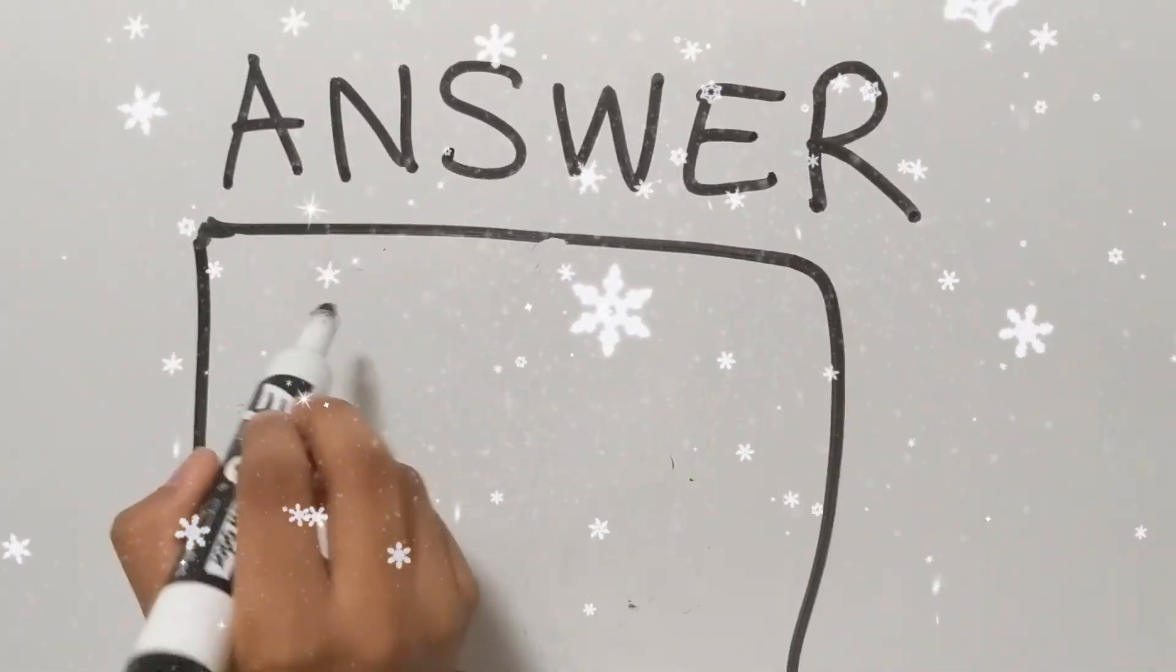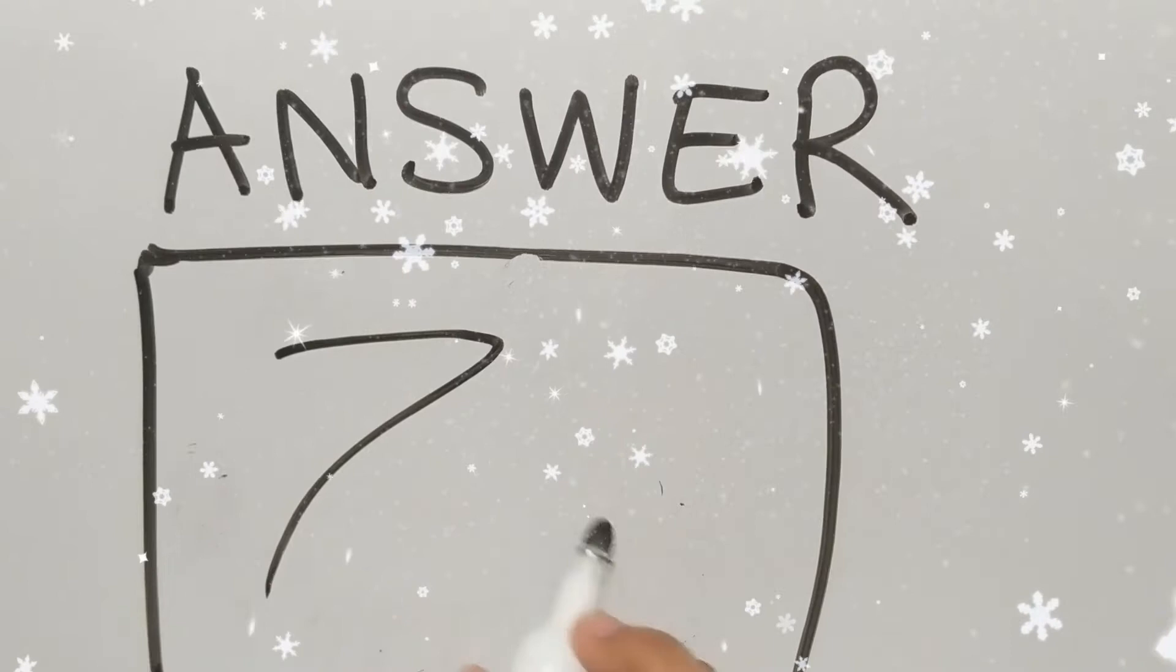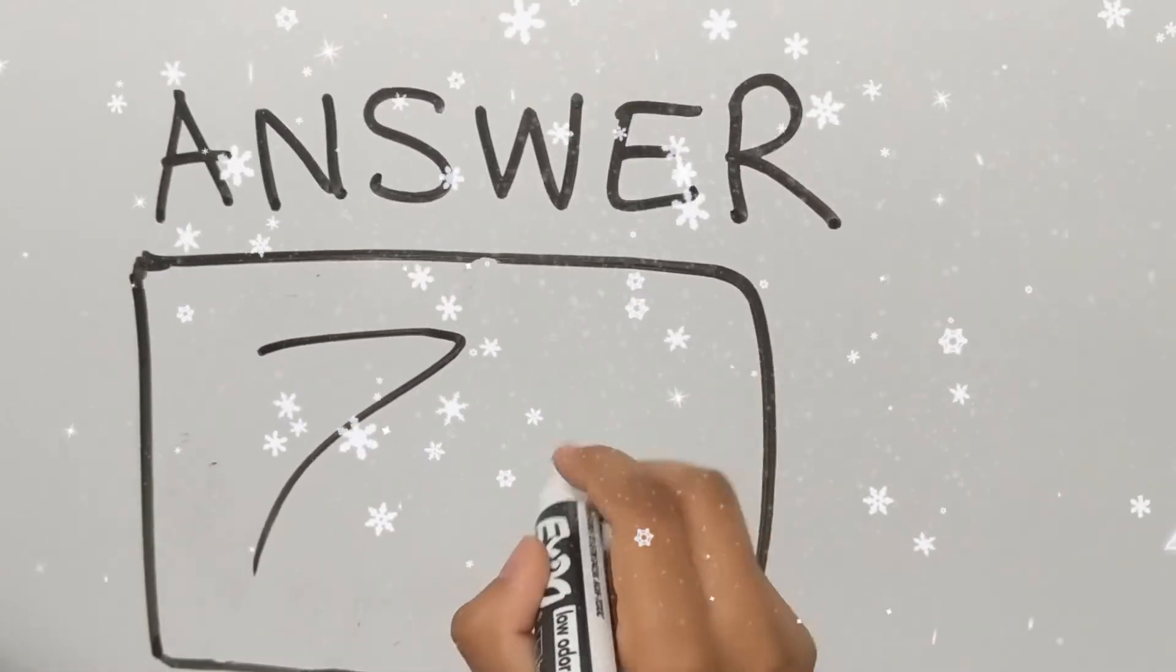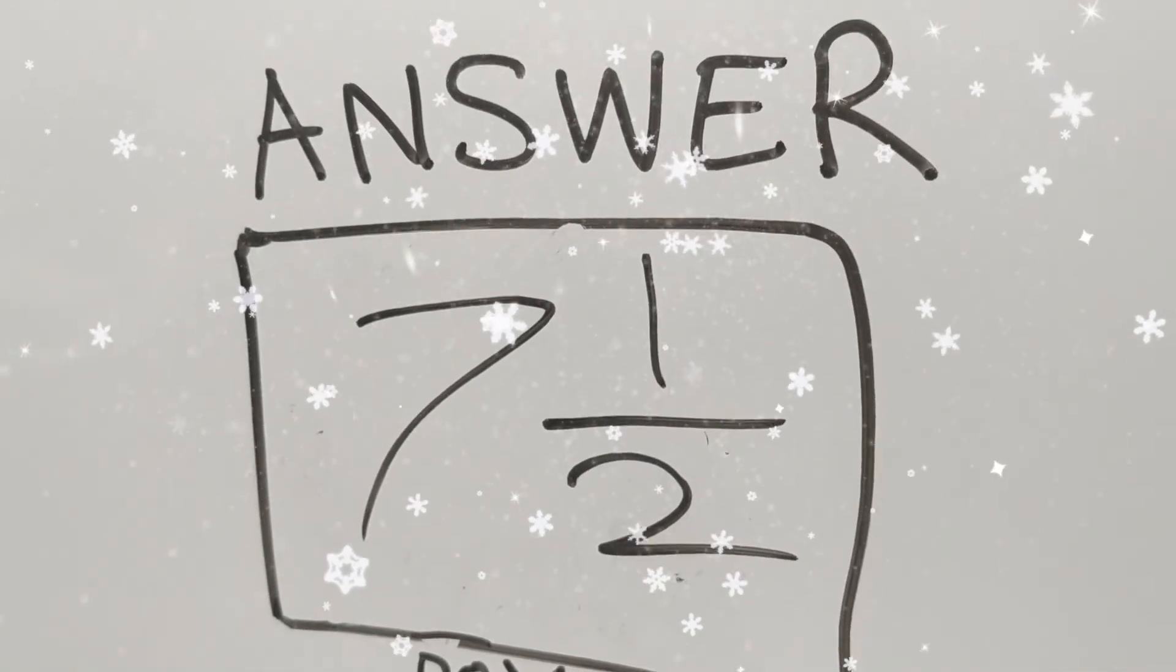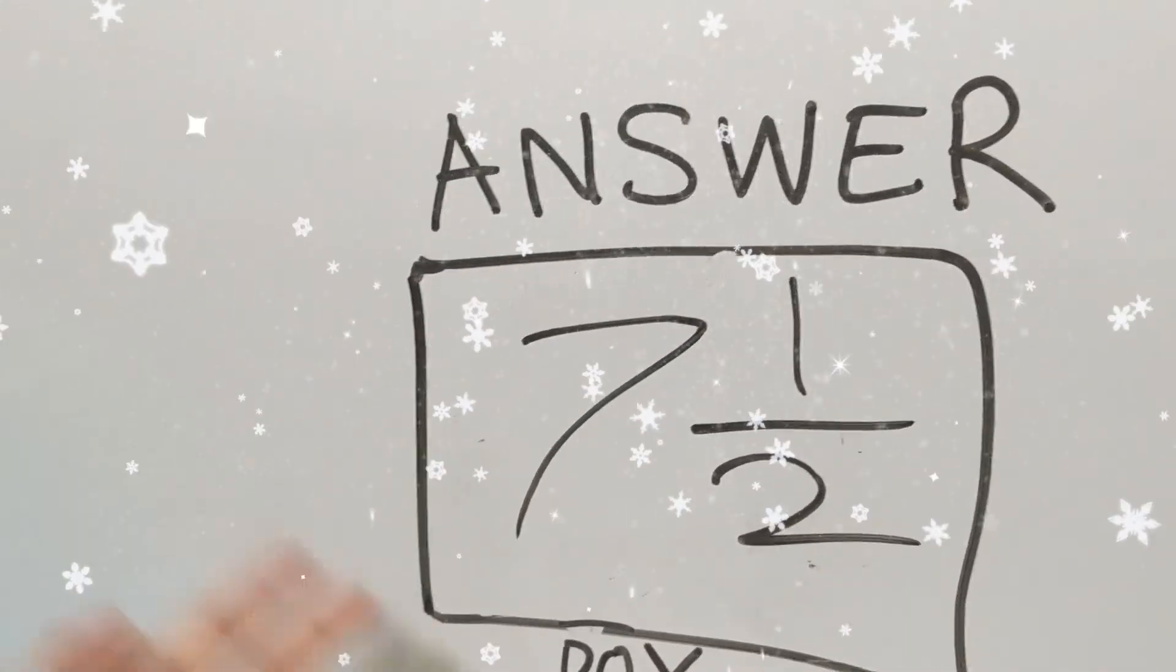Now let's go to our answer box. There. So the half of 15 is 7 and a half.